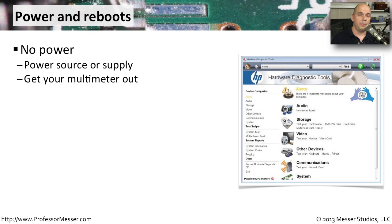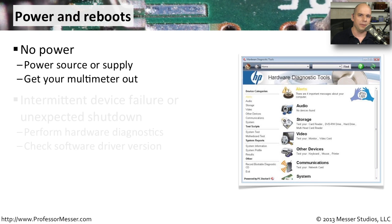If you're turning on your computer and nothing happens, you can probably bet there's some type of power-related issue. Get out your multimeter, check to make sure you're getting power from the wall outlet, and make sure that power is getting through the power supply and onto the motherboard. That may help you determine where the problem is occurring when you start your computer.